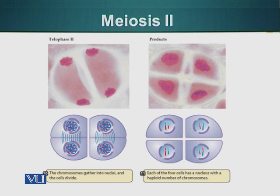In telophase of meiosis II, it is again similar. After the chromosomes start to decondense again and the nuclear envelope starts to form, ultimately there will be cytokinesis, and now from one cell we have made four cells.